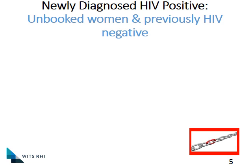Let's look at a scenario of a mom arriving in the labour room unbooked. There may be a record showing a previously negative HIV test, but today she is HIV positive. This is a high-risk situation. If she has converted recently, the baby is at very high risk for transmission because the mother's viral load will be extremely high.